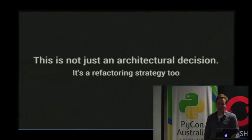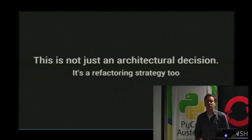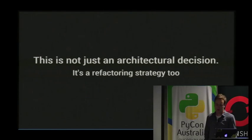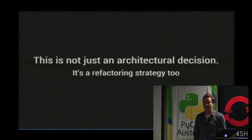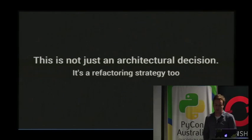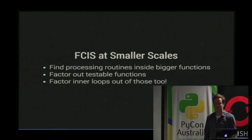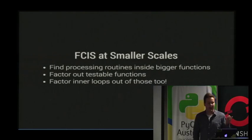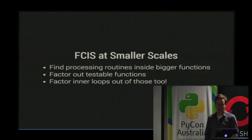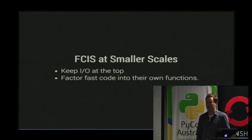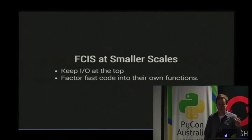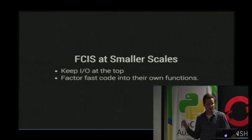The core observation is that this approach works surprisingly well as a local refactoring strategy. Any function that calls IO gets integration tested; any function that doesn't gets unit tested. So if you want to increase your unit test coverage, it's just a matter of refactoring to pull out the purely functional, side-effect-free bits of your functions. Find the processing routines that are inside your bigger functions, factor these out into bits where you can define the interfaces clearly, put tests around them, and concentrate on keeping your IO towards the top in relatively few functions.